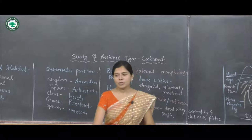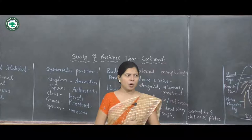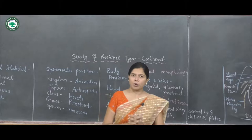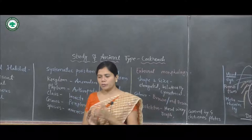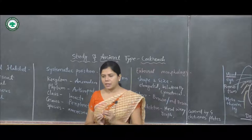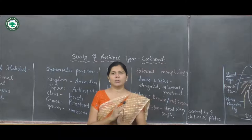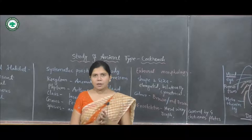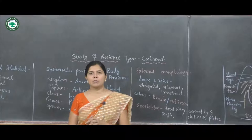The body of the cockroach is divided into three regions: head, thorax, and abdomen. The head is attached at a right angle to the thorax by a thin, narrow, movable neck also known as the cervix.